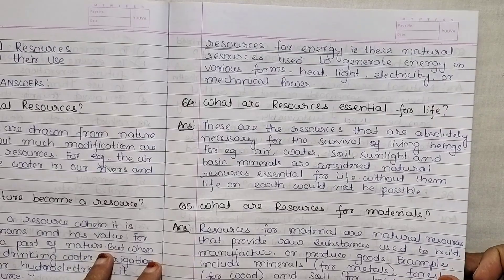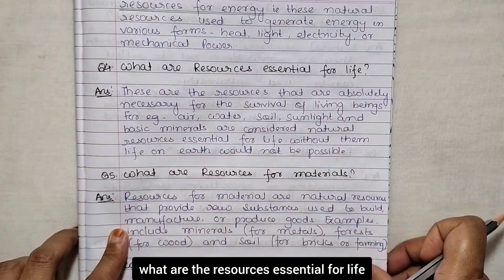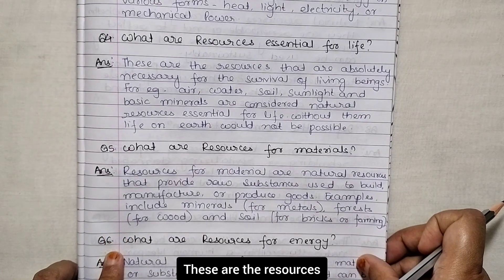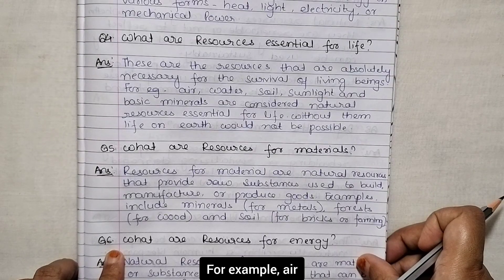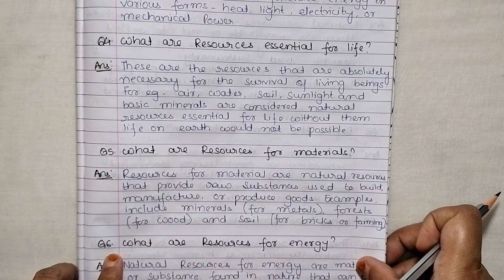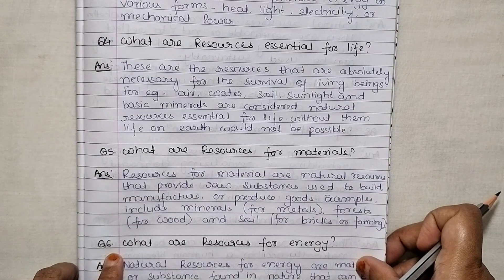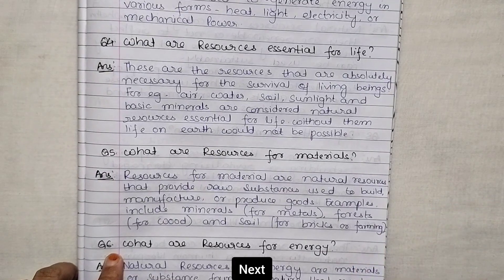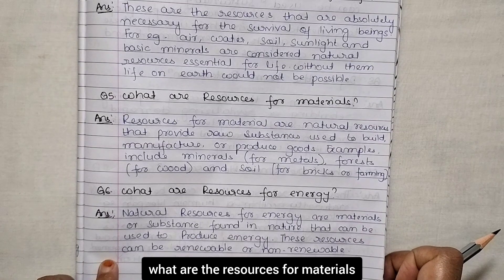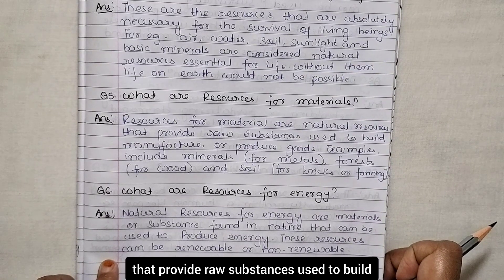Next: what are the resources essential for life? These are the resources that are absolutely necessary for the survival of living beings. For example, air, water, soil, sunlight and basic minerals are considered natural resources essential for life. Without them, life on earth would not be possible.